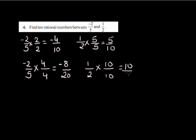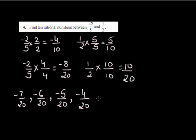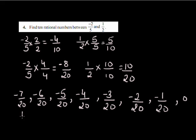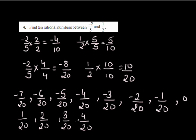I will also convert 1/2 to denominator 20 by multiplying by 10/10, giving 10/20. Now I can list rational numbers between -8/20 and 10/20: -7/20, -6/20, -5/20, -4/20, -3/20, -2/20, -1/20, 0, 1/20, 2/20, 3/20, 4/20, and up to 10/20.